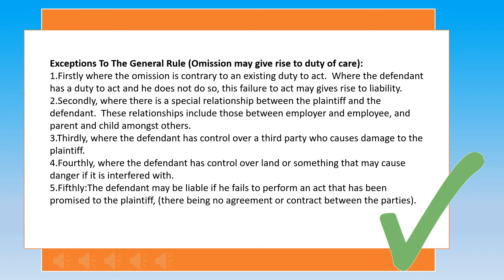Secondly, when there is a special relationship between the plaintiff and the defendant. This relationship includes those between employee and employer, and parents and child, among others. For example, the driver of a car swerved trying to avoid a child, and the school authorities were held liable for letting the child out of the school compound, as the court found that it was foreseeable that the child would cause an accident.